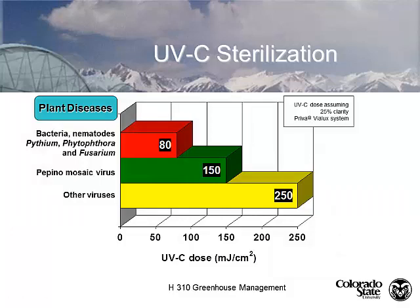We generate UVC radiation in a lamp and use it as a sterilizer. A UVC dose of 80 mJ/cm² is enough energy to kill most bacteria, nematodes, Pythium, Phytophthora, Fusarium, and similar diseases — even in somewhat turbid water with about 25% clarity. For Pepino Mosaic Virus it takes twice as much, and for other viruses it takes 250 mJ/cm², which is a pretty lethal dose.